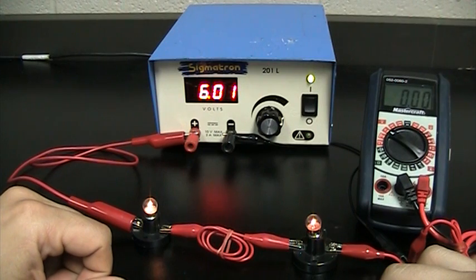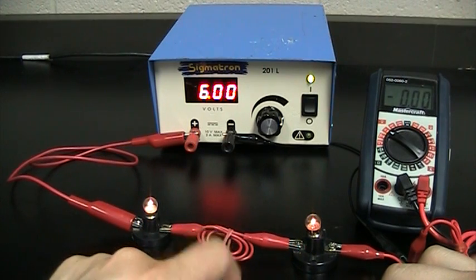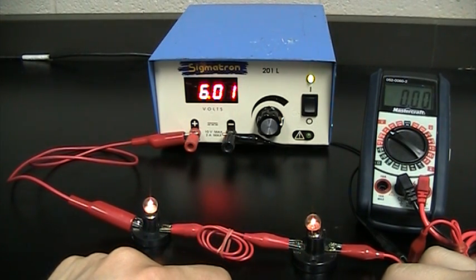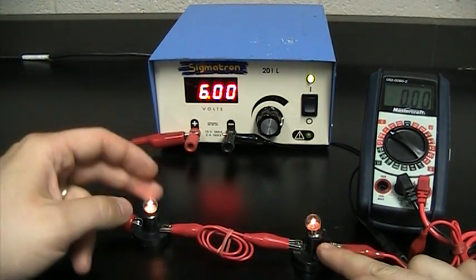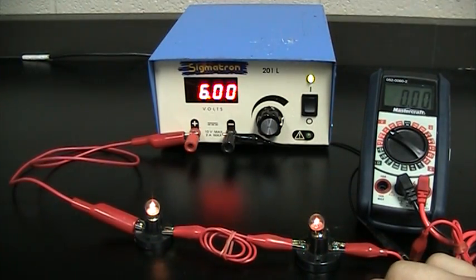And so our bulbs are going to be dimmer because they're sharing voltage, only getting three each, and the amperage is dropping so there's fewer coulombs coming per second to deliver energy. They're dependent on each other for being on and that's the foundation for series circuits.